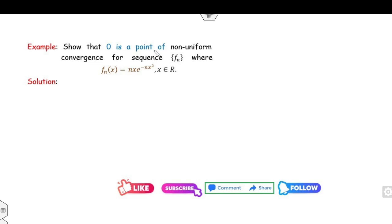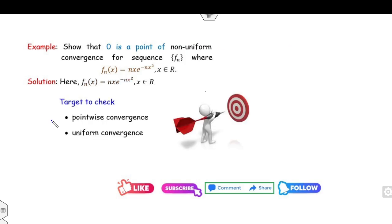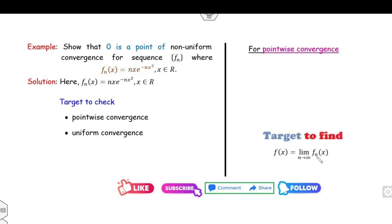Now look at another example: show that x = 0 is a point of non-uniform convergence. This means fn(x) does not converge to f uniformly near x = 0. Always remember: first check pointwise convergence. If a sequence is not pointwise convergent, then it is not uniformly convergent either. For pointwise convergence, we consider two cases: x = 0 and x ≠ 0.